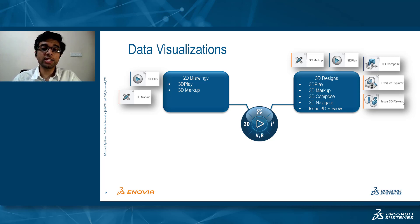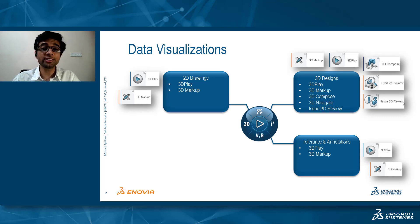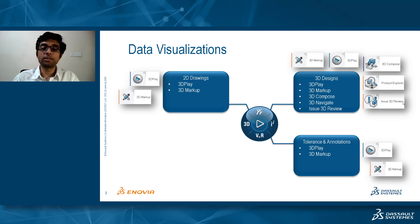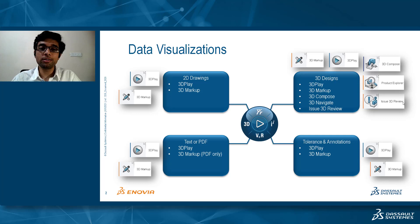Another application is Issue 3D Review, specifically designed to locate issues inside the assembly in 3D. Different bubbles pop up on the 3D so you can easily identify which components have issues in the assembly. Another data type is tolerances and annotations — you can visualize these in 3D Play as well as 3D Markup. In 3D Play you can navigate through them, and in 3D Markup you can create annotations or reviews on 3D designs that contain tolerances.